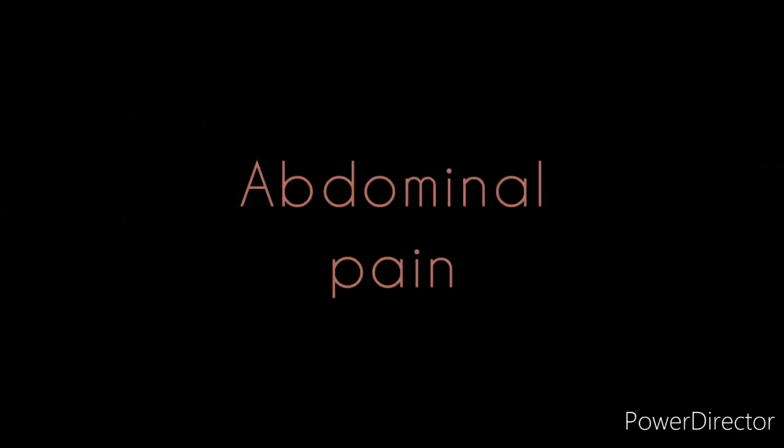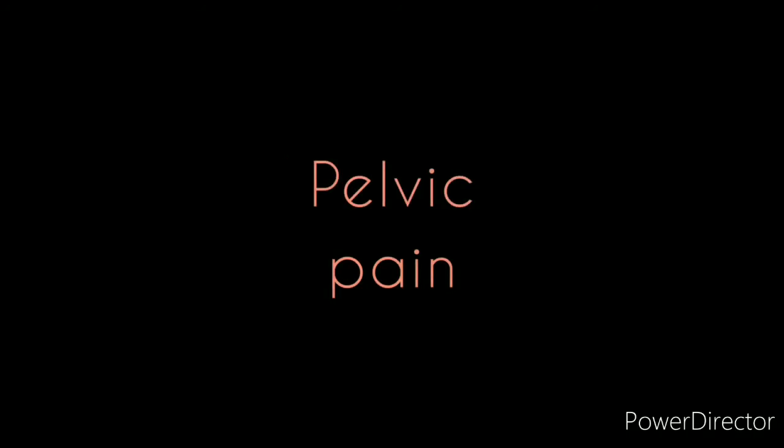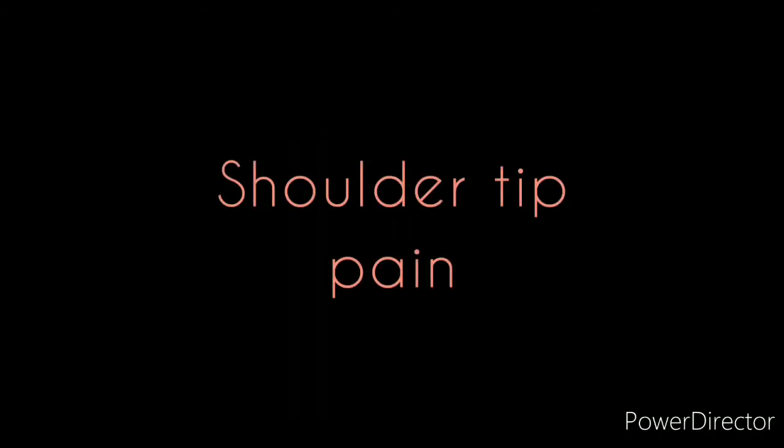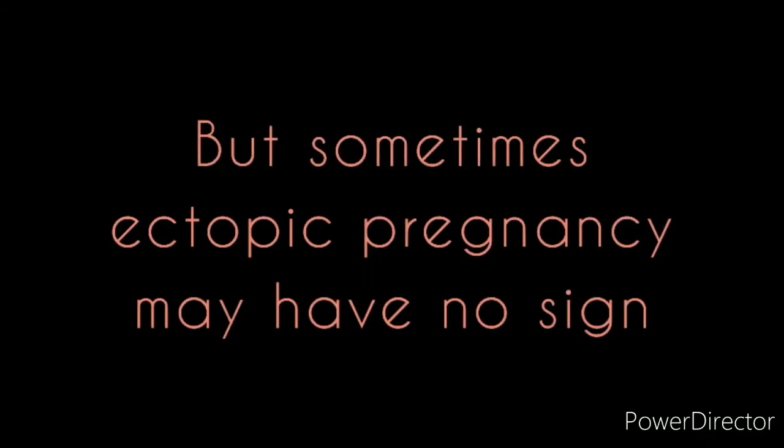Some common symptoms of ectopic pregnancy include light to heavy vaginal spotting or bleeding, abdominal pain, pelvic pain, dizziness or fainting, and shoulder tip pain. However, sometimes ectopic pregnancy may have no signs at all.